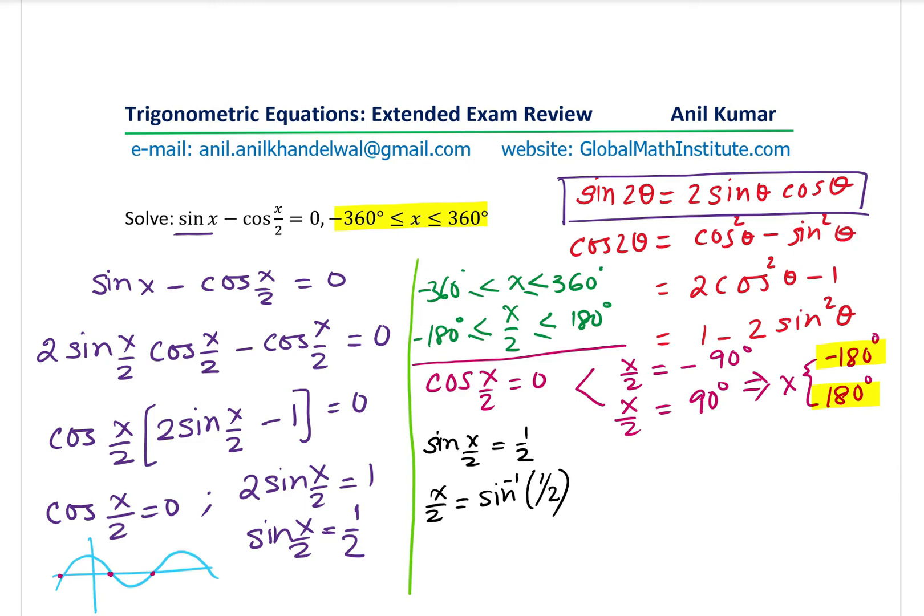You could use special triangles to get this particular solution or you could use your calculator. If you use any one of them, the answer which you are going to get is 30 degrees. X by 2 is 30 degrees. So what are the solutions which you should be considering?